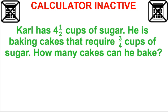Other things that you can see a lot of are the ones like this, where you got some mixed number and you got to divide it up, usually by a fraction. Sometimes it's like taking a board and cutting it up. Sometimes it's like this, where you got a recipe. So we got Karl has four and a half cups of sugar, baking cakes that require three-fourths cups of sugar. How many cakes can you bake? So this is dividing it up. You're taking the four and a half cups, dividing it into three-fourths.